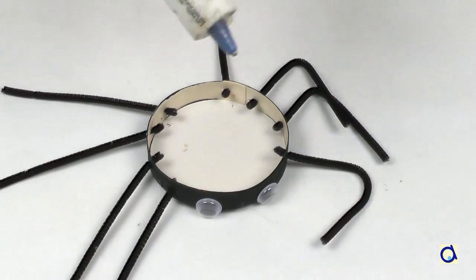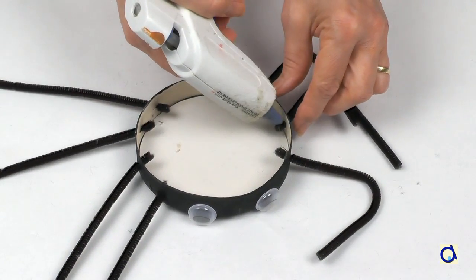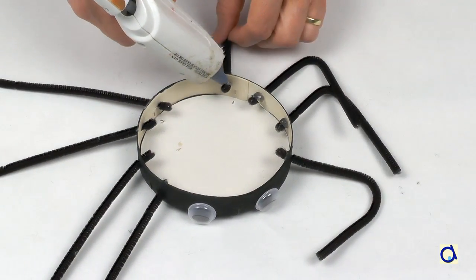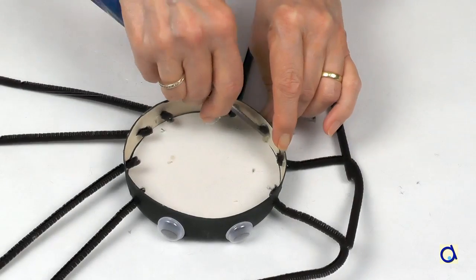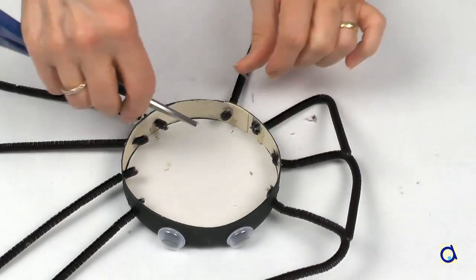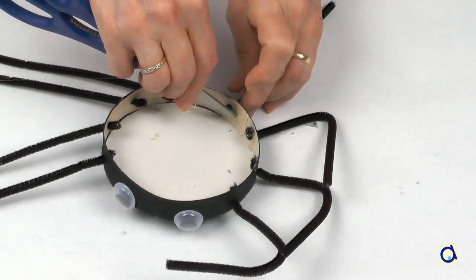When you have inserted the eight pipe cleaners in the holes, put a dot of hot glue on the end of each leg inside the box and fold the end of the pipe cleaner with the tip of a pair of scissors to avoid burning your fingers on the hot glue.